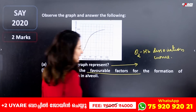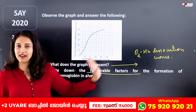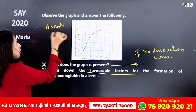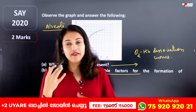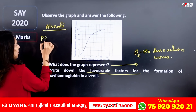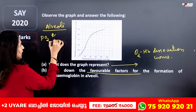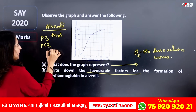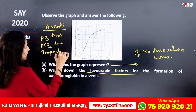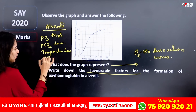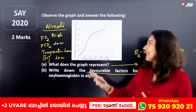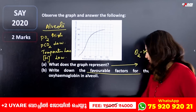Write down the favorable factors for the formation of Oxygen Hemoglobin in the Alveoli. The favorable factors are: Partial Pressure of Oxygen is High, Partial Pressure of Carbon Dioxide is Low, Temperature is Low, and Hydrogen Ion concentration is Low. These are the favorable factors for Oxygen Hemoglobin formation in the Alveoli.